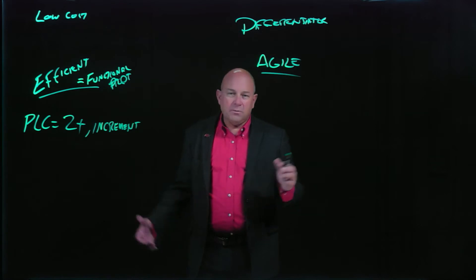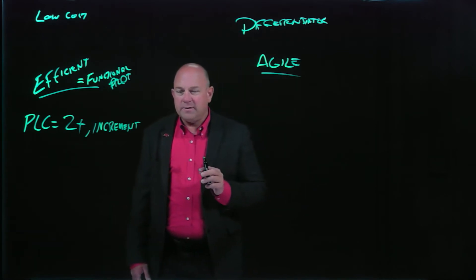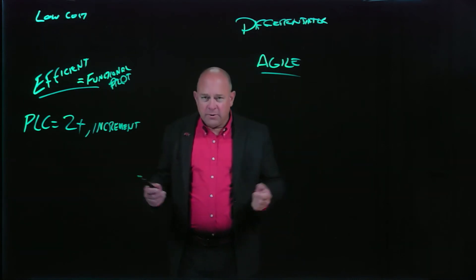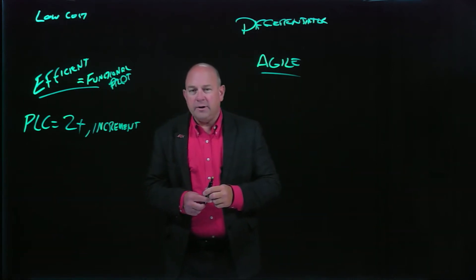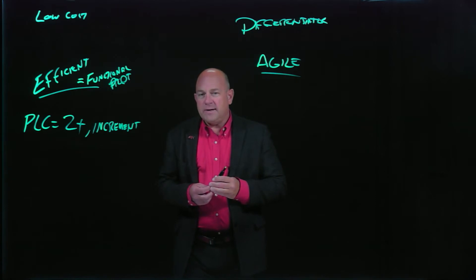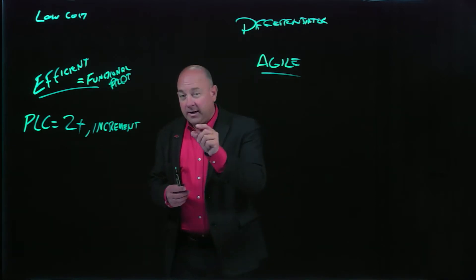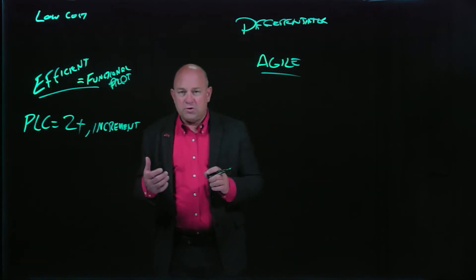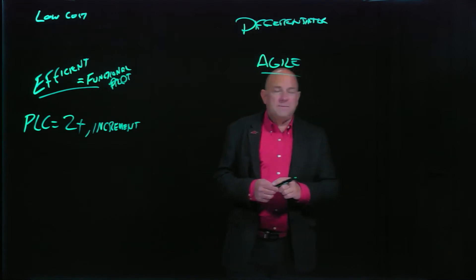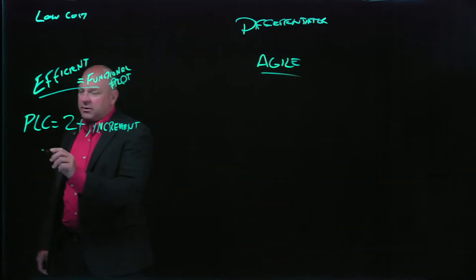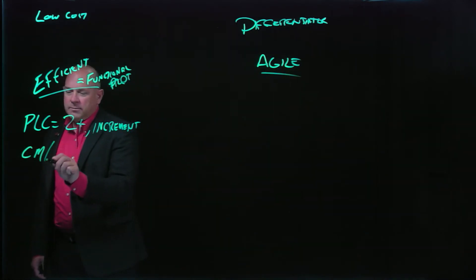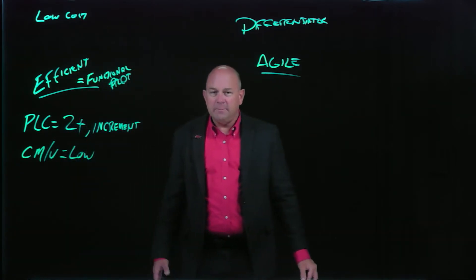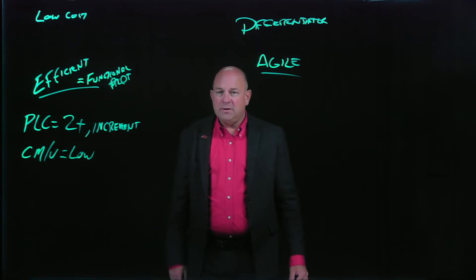Think about handheld tools, like a Black & Decker drill. What was the last innovation on the Black & Decker drill? Maybe the light over top of the drill — nothing that is incredibly revolutionary, more incremental types of changes. As a result of this, the contribution margin per unit tends to be fairly low. In other words, we don't tend to make a great deal of margin on each unit.